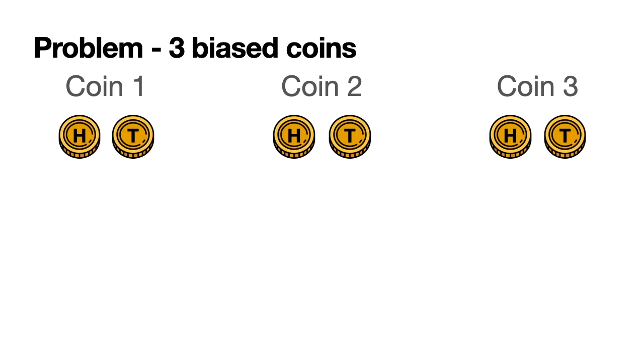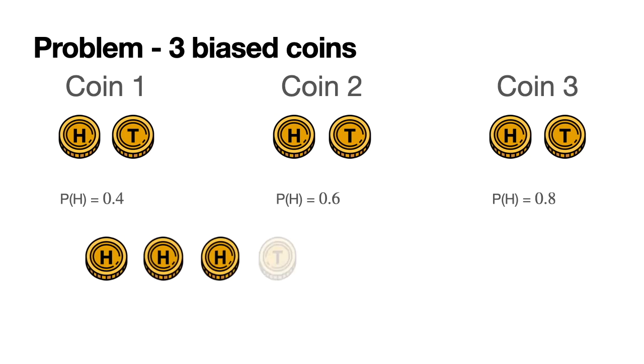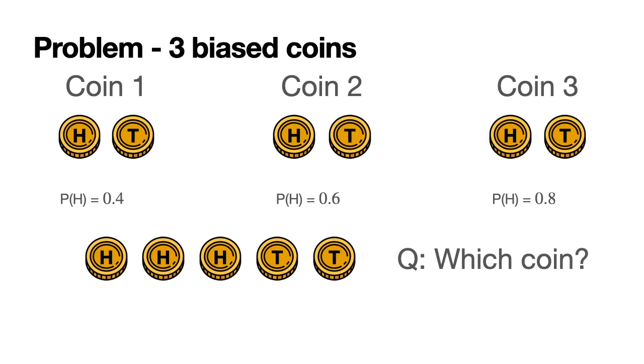None of them actually return heads with a probability of one half. The first one returns heads with a probability of 0.4, the second one with a probability of 0.6, and the third one with a probability of 0.8. Now we grab one of these three coins, but we don't know which one we grabbed. The point is to guess which coin we grabbed. So we flip it five times and we obtained heads three times and tails two times in that order. And now here's the question: which coin do you think we grabbed?